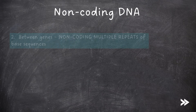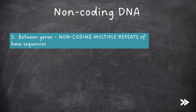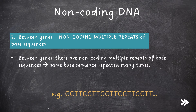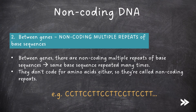Finally, we have non-coding multiple repeats of base sequences between genes. This is the same base sequence repeated many times — for example, CCTT, CCTT repeated over and over again many times. They don't code for amino acids either, so they're called non-coding repeats.